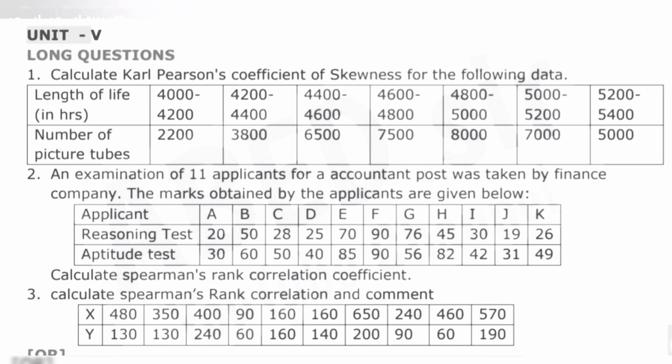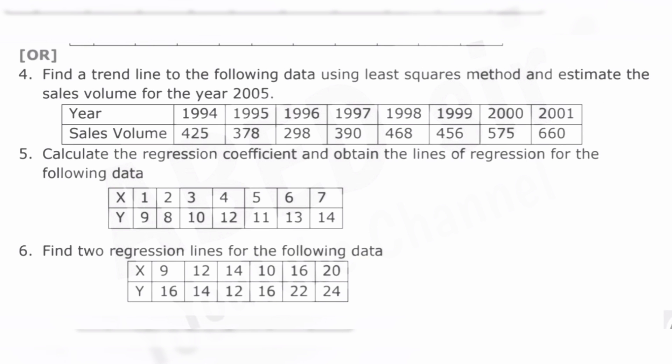From Unit 5, rank correlation and Karl Pearson's coefficient of correlation are the most important — compulsory problematic questions will be asked. I've already uploaded explanation videos of these topics in our channel. BBA students study these topics in Semester 2 and BCom students in Semester 3 — the topics are the same. Regression is also a compulsory question — explanation videos will be uploaded, but start your preparation as soon as possible. You can also find explanation videos on other channels on YouTube.